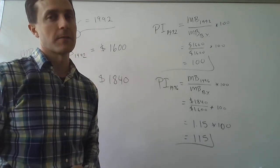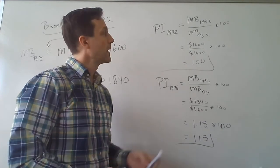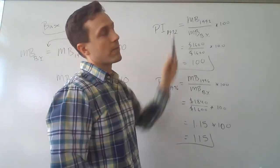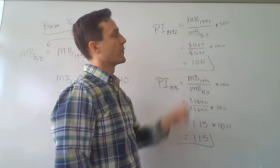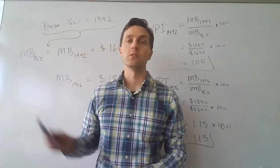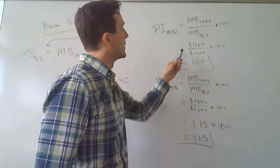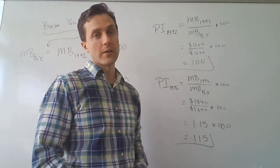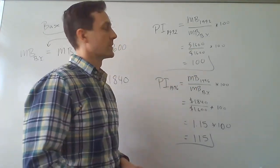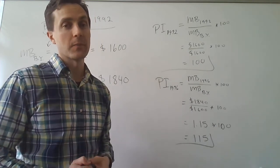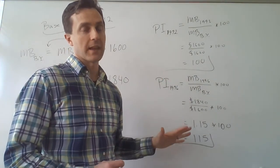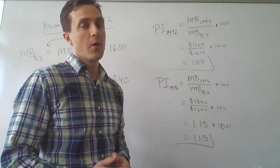We can use all this information to figure out the values of the price index in these two different years. The value of the price index in 1992 is whatever the value of the market basket is in 1992 divided by the value of the market basket in the base year. Of course those values happen to be the same because 1992 is the base year, so that's 1,600 divided by 1,600, and we multiply by 100 to normalize this — so it's just 1 times 100, which is 100. The base year always has a price index value of 100.